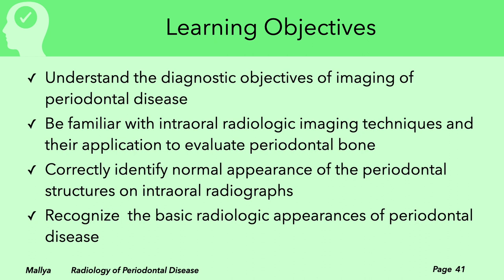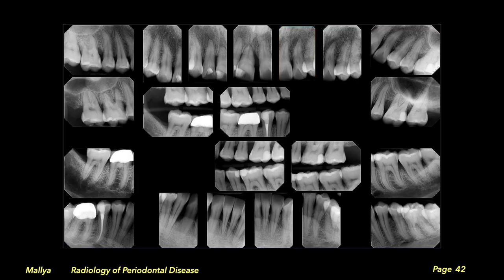To summarize, we reviewed the diagnostic objectives of imaging for periodontal disease, the radiographic imaging techniques and their specific application to evaluate periodontal bone, the normal appearances of periodontal structures on intraoral radiographs, and the basic radiological appearances of periodontal disease. With that information, you should be able to categorize the pattern and severity of periodontal bone loss.